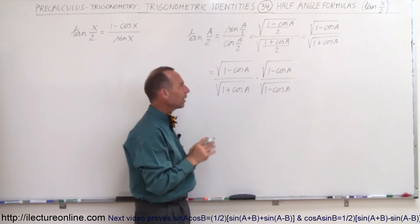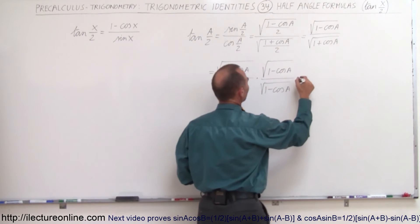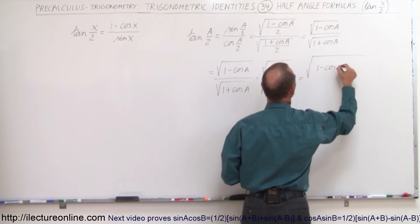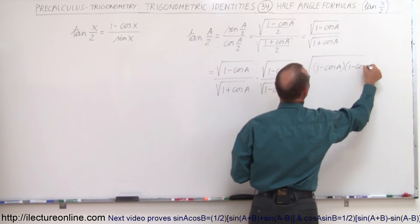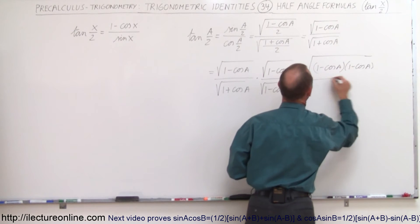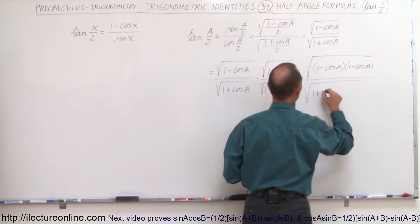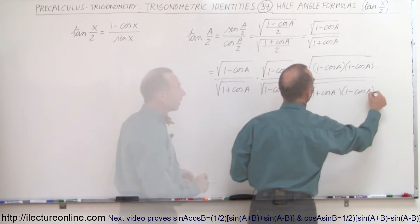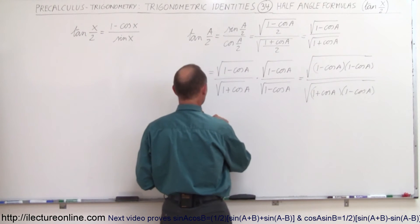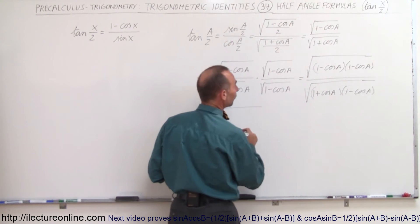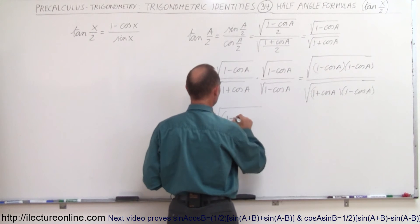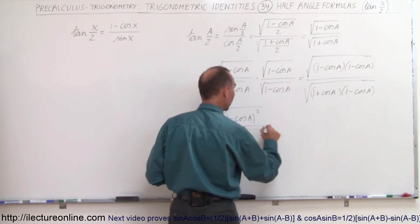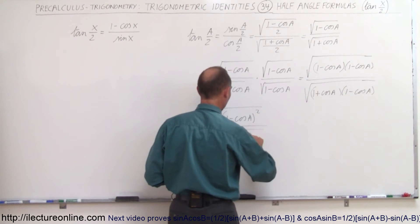So, an interesting trick — what happens when we do that? Let's multiply this together. This is equal to the square root of (1 minus cos(a)) times (1 minus cos(a)), all divided by the square root of (1 plus cos(a)) times (1 minus cos(a)). When we simplify that, we get the square root of (1 minus cos(a)) quantity squared, divided by the square root of (1 minus cos²(a)).